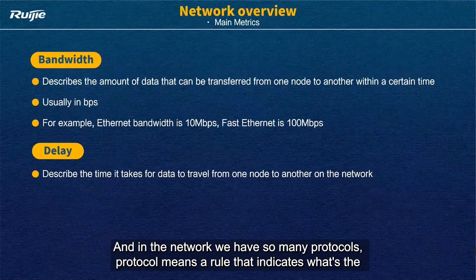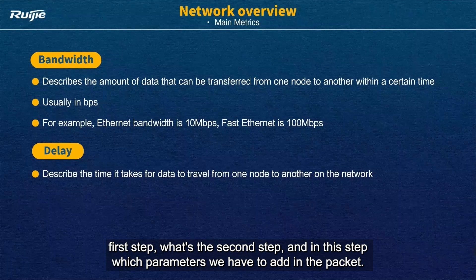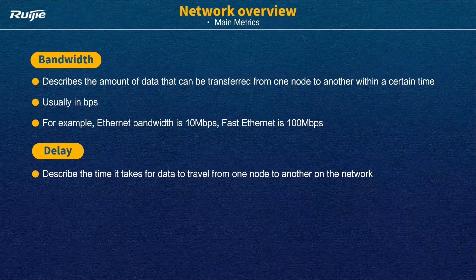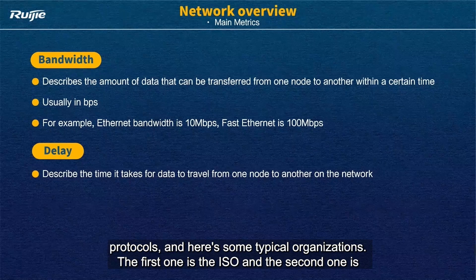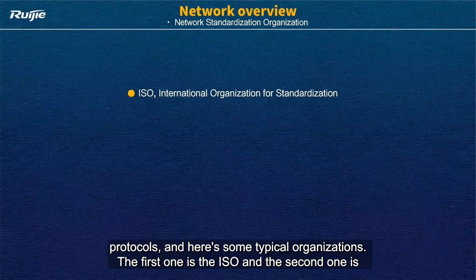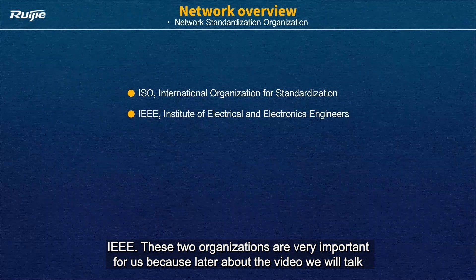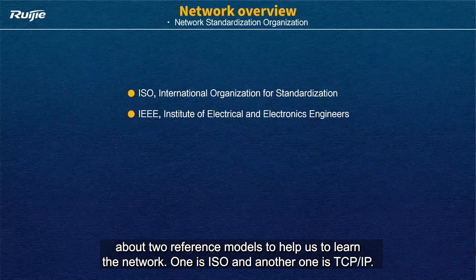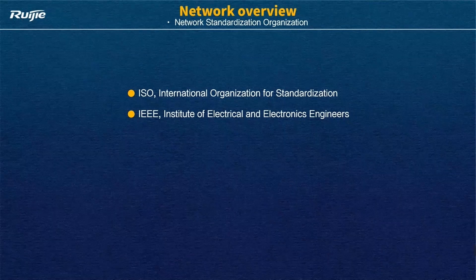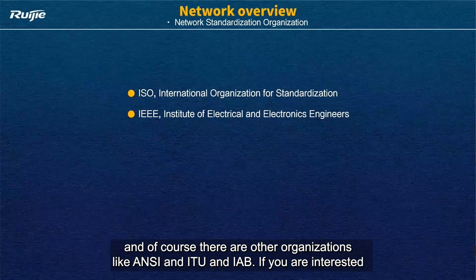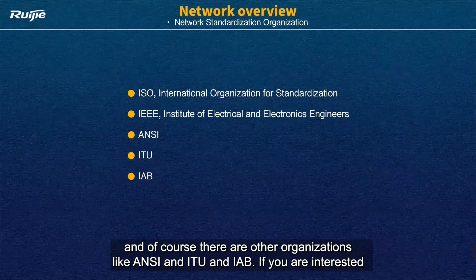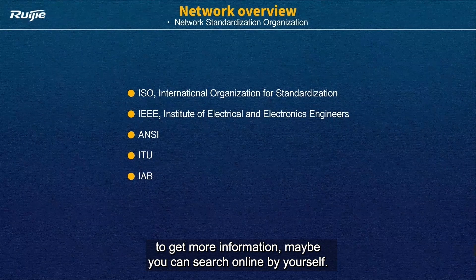In the network we have many protocols. A protocol is a rule that indicates the first step, the second step, and which parameters we have to add in the packet at each step. This rule is called a protocol. We have many organizations that help us to establish these protocols. Here are some typical organizations. The first one is ISO and the second one is IEEE. These two organizations are very important because in later videos we will talk about two reference models to help us learn the network — one is the OSI model from ISO and another one is TCP/IP. There are also other organizations like ANSI, ITU, and IAB. If you are interested, you can search online for more information.